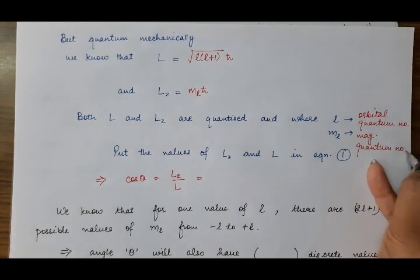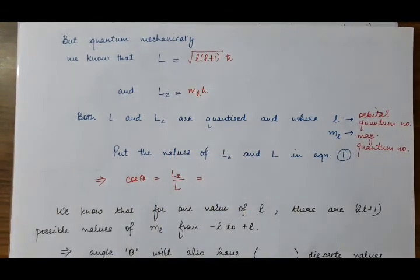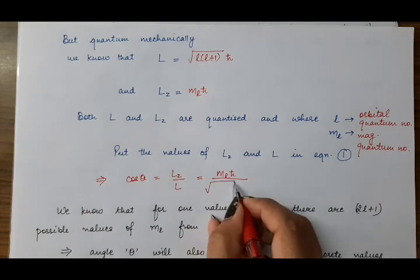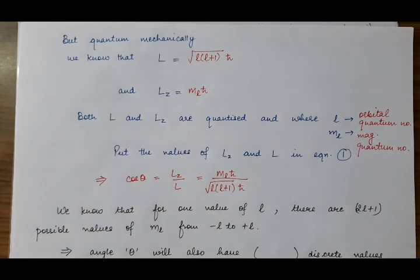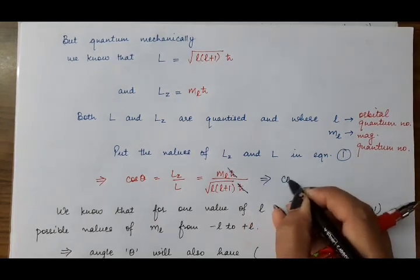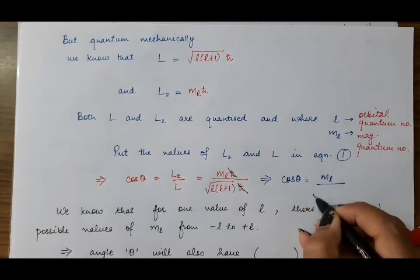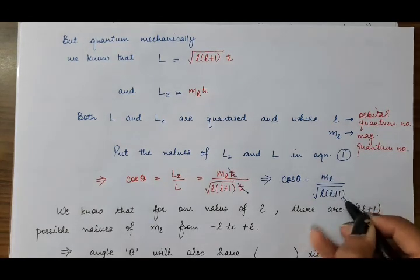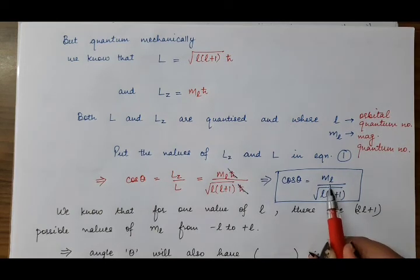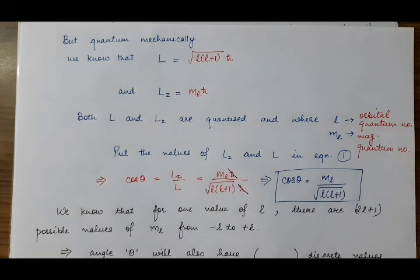Now putting both values of L and LZ into the equation of cos theta, which is LZ divided by L: LZ is ML·h-bar, and L is sqrt(l(l+1))·h-bar. The h-bar terms cancel out, so cos theta equals ML divided by sqrt(l(l+1)).